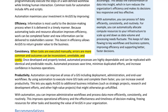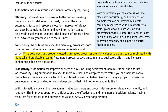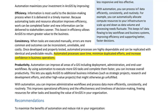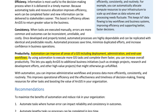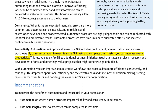Consistency: when tasks are executed manually, errors are more common and outcomes can be inconsistent, unreliable, and costly. Once developed and properly tested, automated processes are highly dependable and can be replicated with identical and predictable results. Automated processes save time, minimize duplicated efforts, and increase confidence in business operations. Productivity: automation can improve all areas of a GIS including deployment, administration, and end-user workflows. By using automation to execute more GIS tasks and complete them faster, you can increase overall productivity.